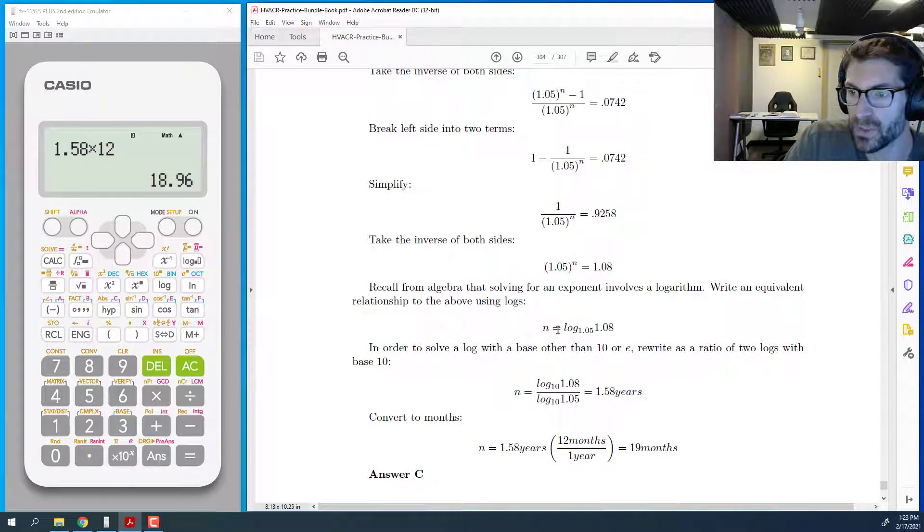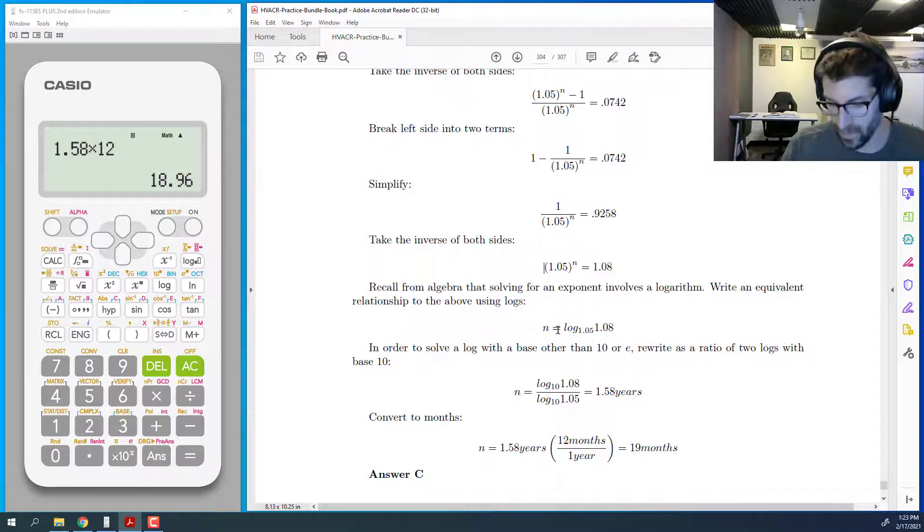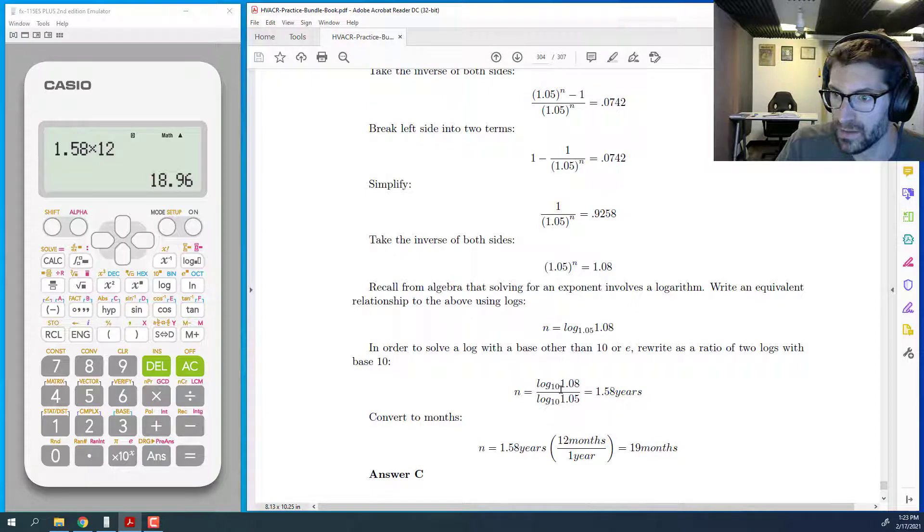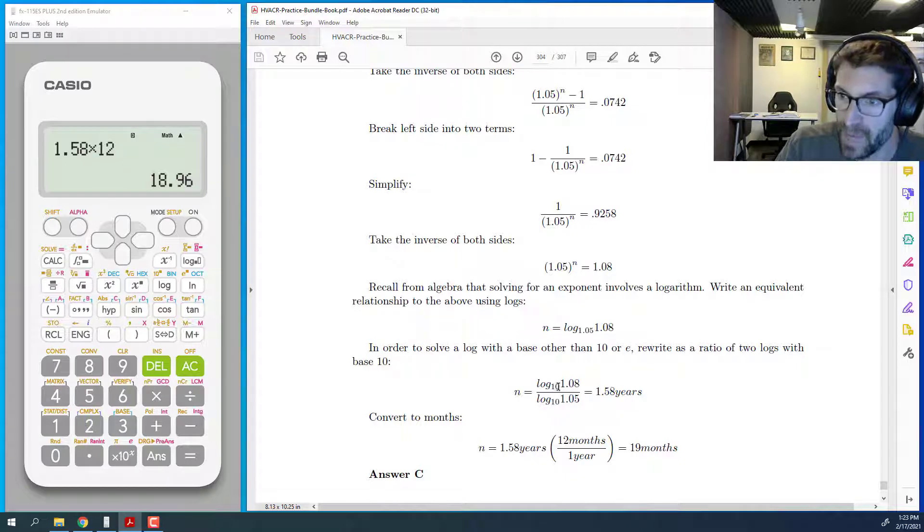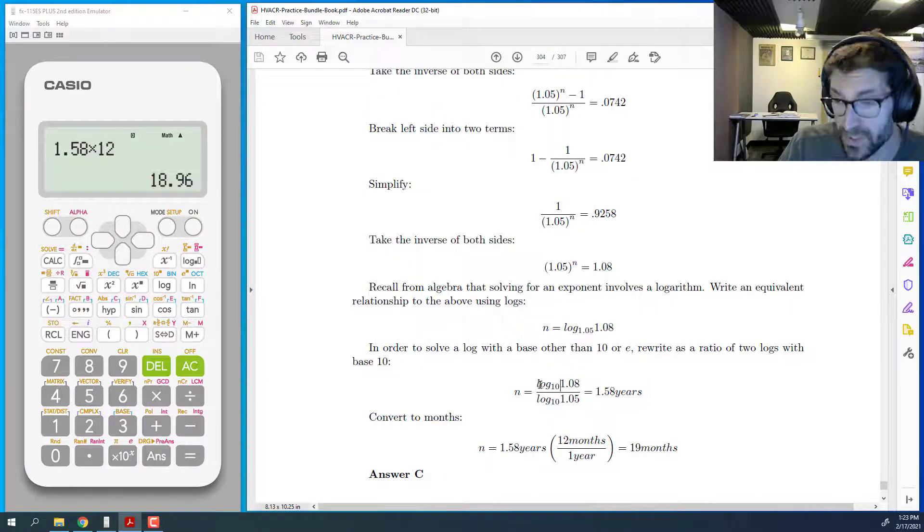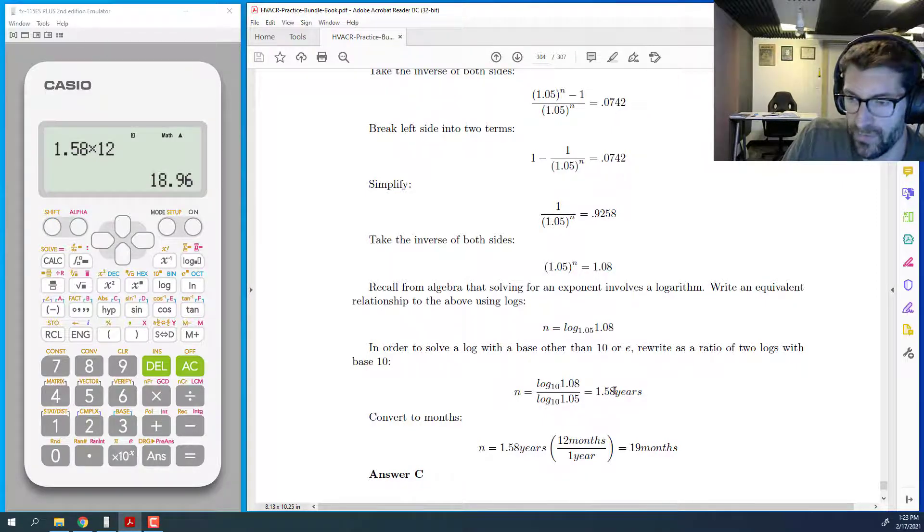So if you were able to express that as a log, now the challenge is normally our calculators can only do log base 10 and log base e. So we have to do a change of base. What you can do then is you can say log of the result 1.08 divided by log of the base 1.05. And the base for that log can be any base. So just use log base 10 since that's what our calculators are able to do. And if you type in your calculator log of 1.08 over log of 1.05, you get 1.58,